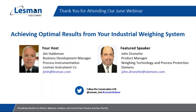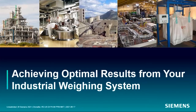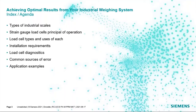Well, thank you Jim. As Jim said, my name is John Drenette. I'm the product manager for the weighing technology products at Siemens, and I want to thank everyone for attending today's webinar: achieving optimal results from your industrial weighing system. Today I'll start out talking about the different types of industrial scales. We'll go into how strain gauge load cells work, the different types of load cells and how each is used, installation requirements, load cell diagnostics, common sources of error, and then some specific application examples.